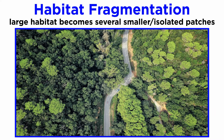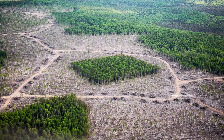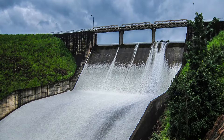Habitat fragmentation is defined as the process by which a large expanse of habitat is transformed into a number of smaller patches of lesser total area, isolated from each other by a matrix of habitats unlike the original. In other words, habitats that were once continuous are now divided into separate fragments. This can happen when humans clear regions to build pasture or crop fields, and even through the creation of hydroelectric reservoirs.